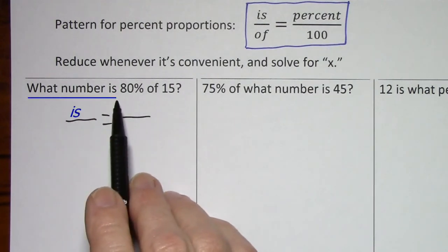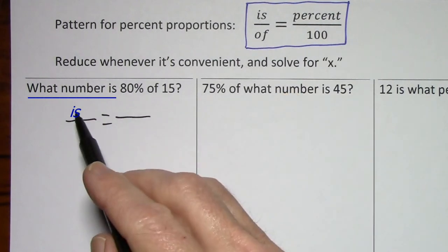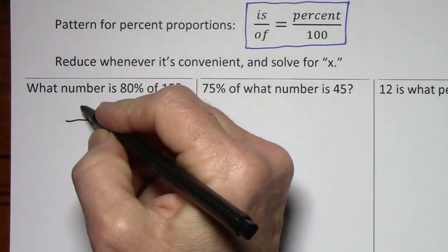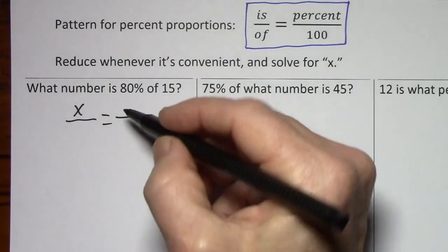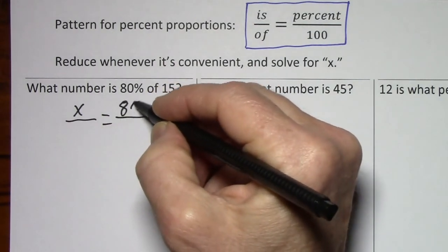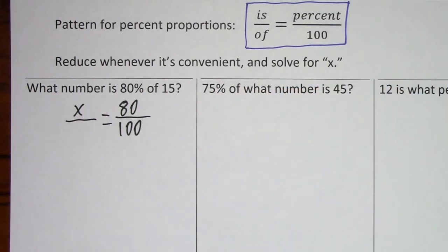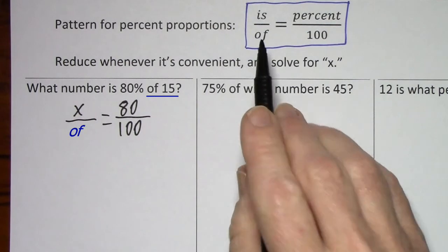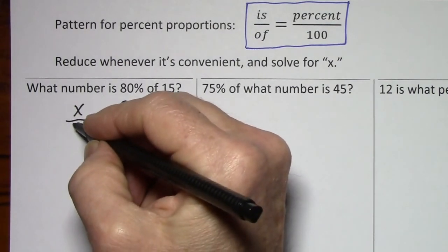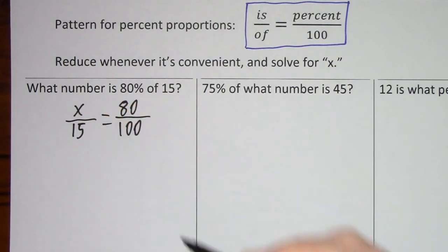So what number is, is goes in the top position. So for what number we'll put a variable. I often use X. 80 percent, that's the same as 80 over 100. Of 15, of goes in the denominator. So the 15 goes in the denominator.